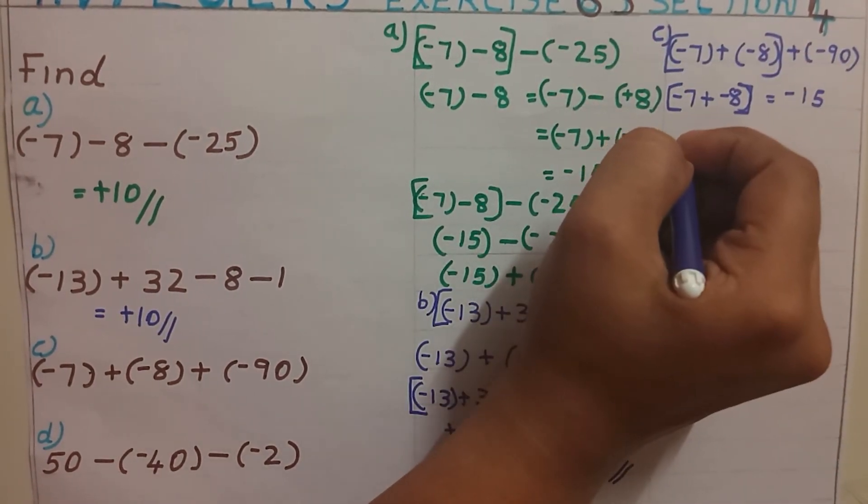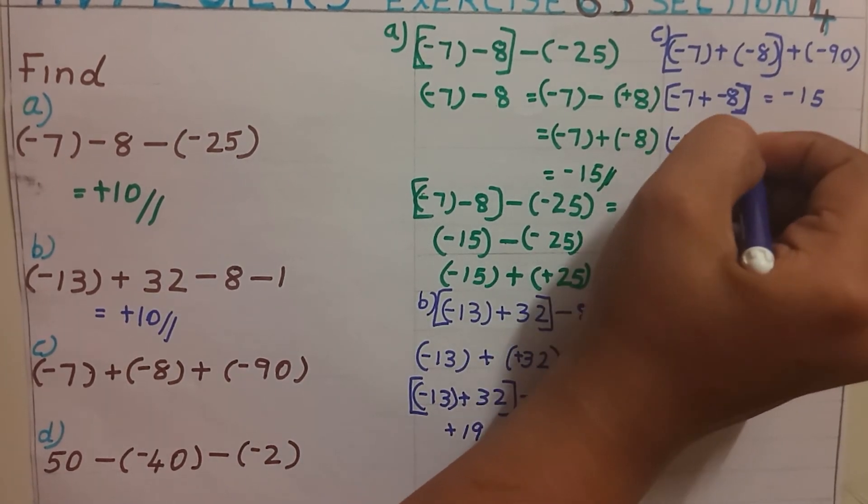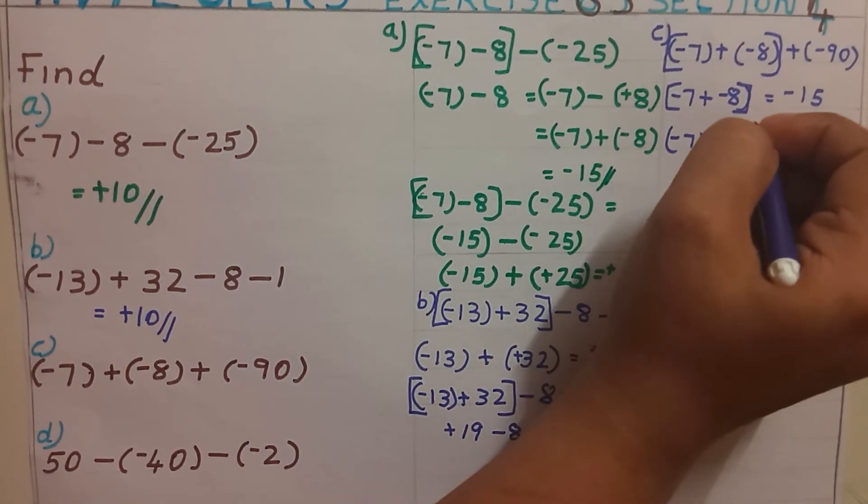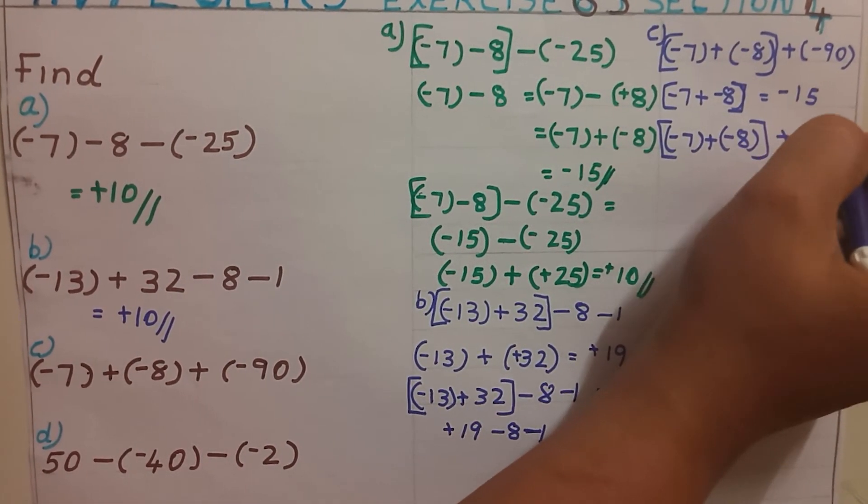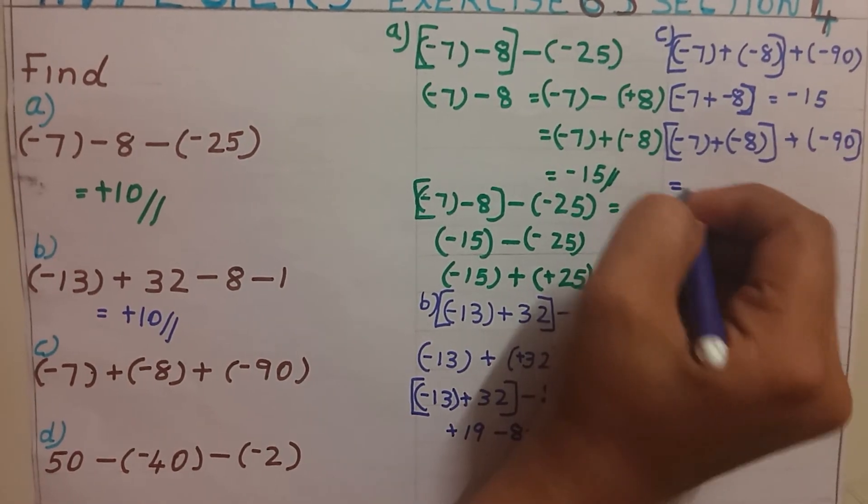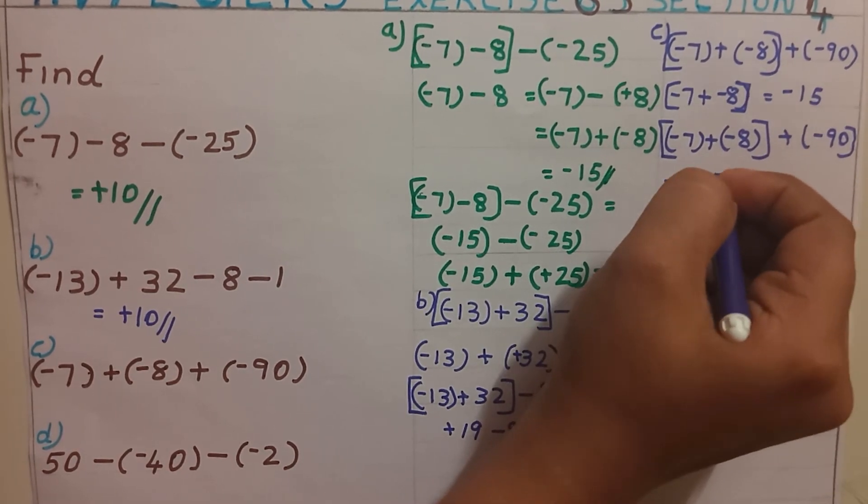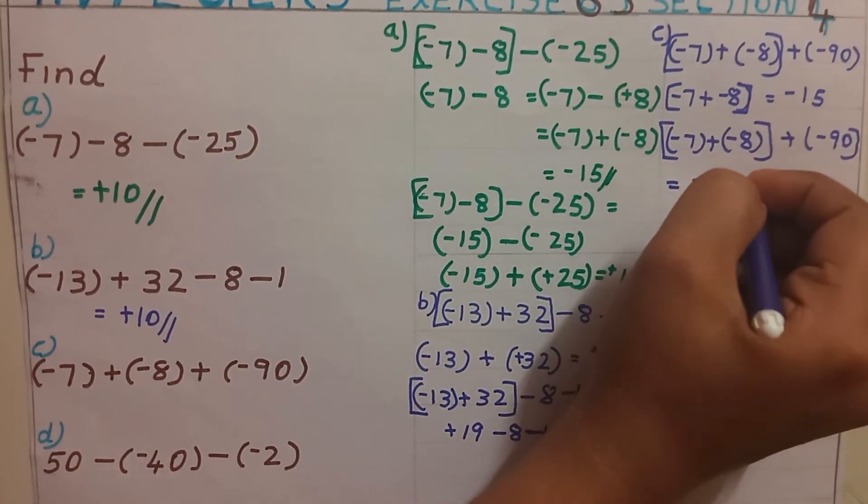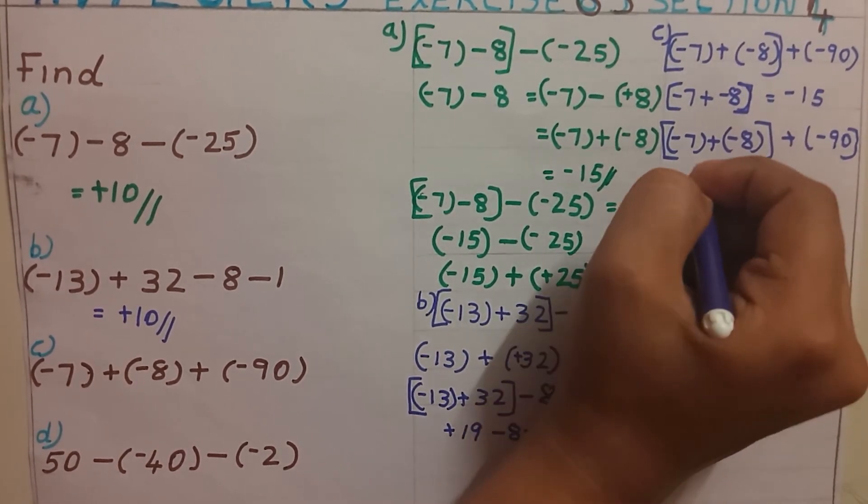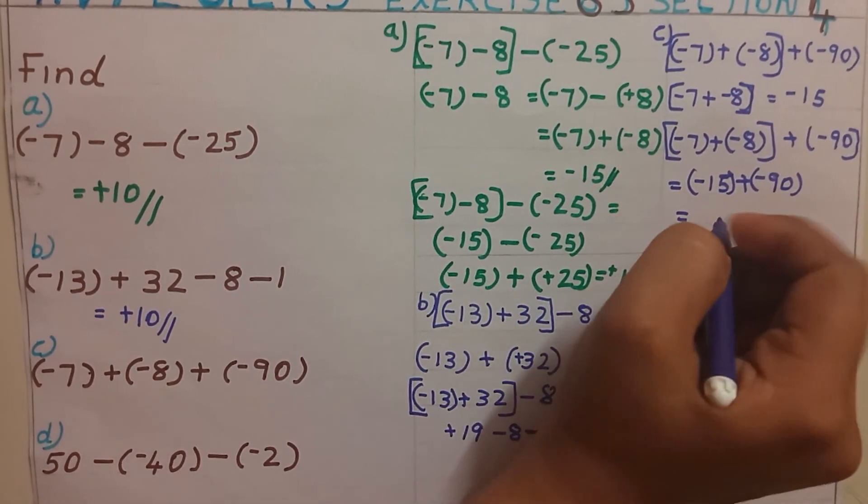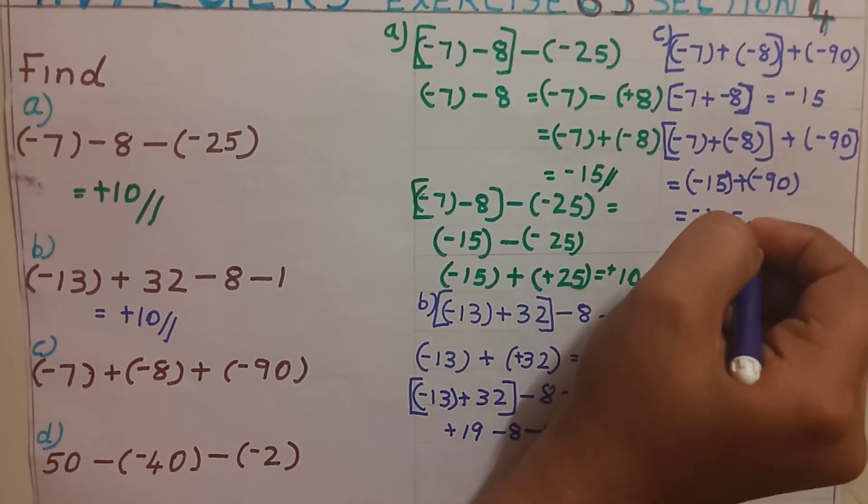So our question becomes like this: minus 7 plus minus 8 plus minus 90 equal to, instead of this bracket the value is minus 15, remaining the number minus 90. Again both the numbers are negative. By applying the rules we will be getting, by adding both the numbers and giving the sign negative.